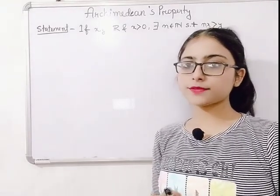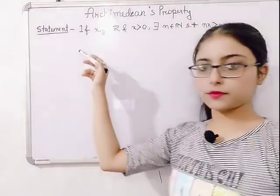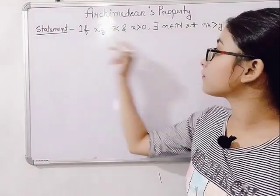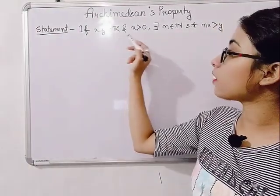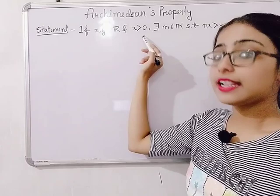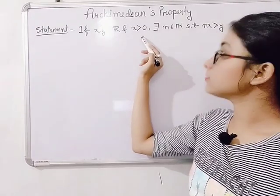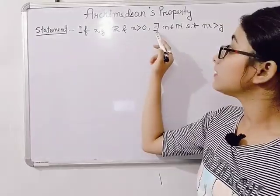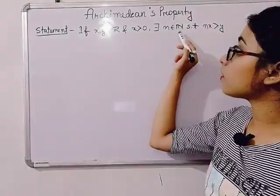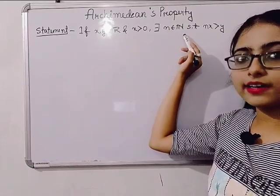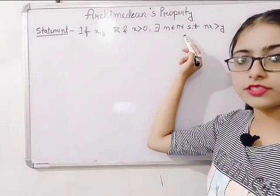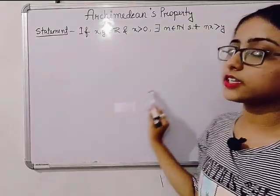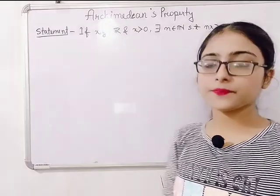So first of all, let's start with the statement of this property. The statement is: if x, y belong to ℝ and x is greater than 0, there exists n belonging to capital N, which is the natural numbers, such that nx is greater than y.